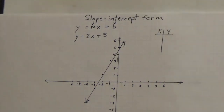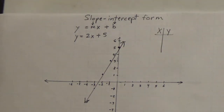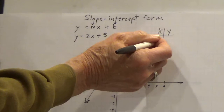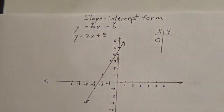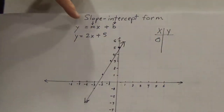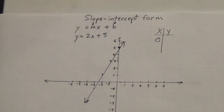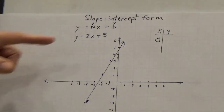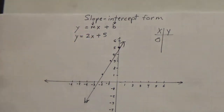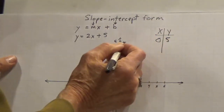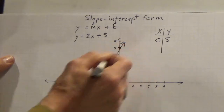Now if you want to make sure this is right, let's make a table. Let's put in 0 for x, because that's easy. If x is 0, 2 times 0 is 0, so we have y equals 5. So we have the point (0, 5), which is my y-intercept.